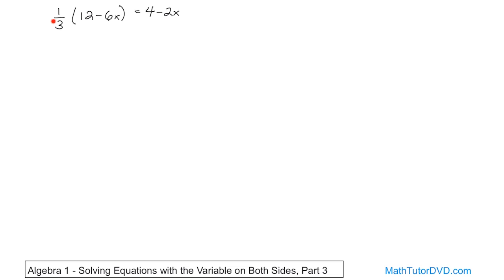So what is 1/3 times 12? You can just write that as 1/3 times 12. And then we have the 1/3 times the negative 6, so it'll be negative 1/3 times 6x, like this. And on the right hand side, you're still going to have 4 - 2x.